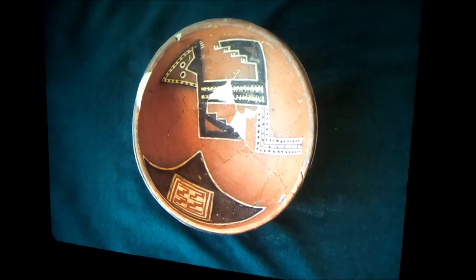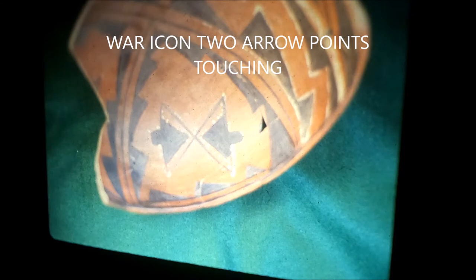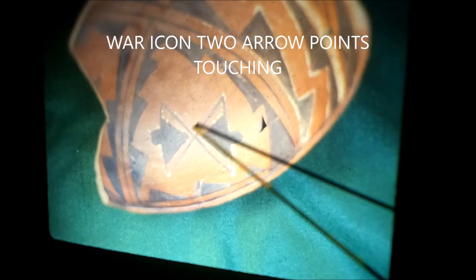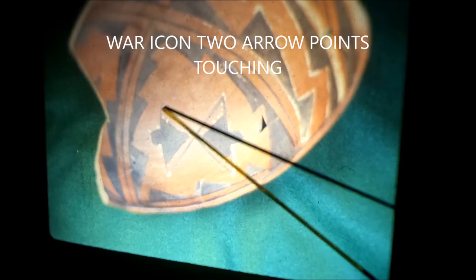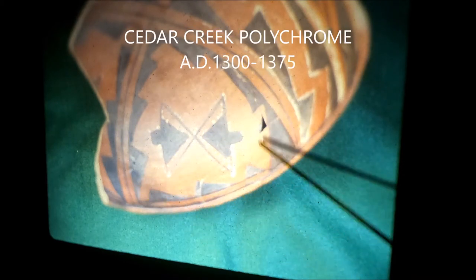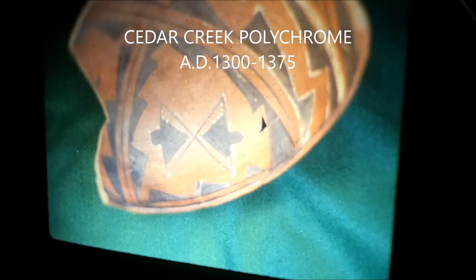We are going to talk about arrow points today. This is a war icon. It's two arrow points touching. That's war. A lot of folks have misinterpreted these symbols as butterflies. Butterflies almost always have the antenna and some other details. Those are not butterflies. That's a war icon.